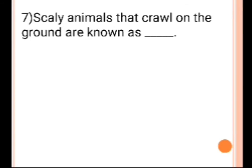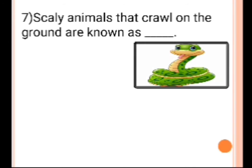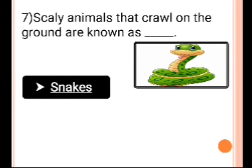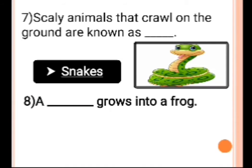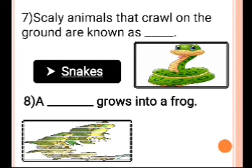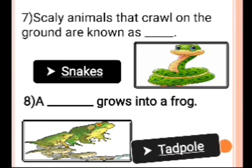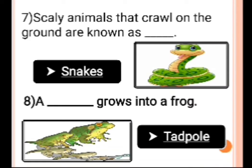Number 7: Slimy animals that crawl on the ground are known as dash. Answer is snakes. Slimy animals that crawl on the ground are known as snakes. Number 8: A dash grows into a frog. Answer is tadpole.